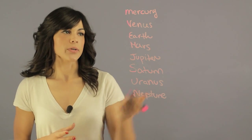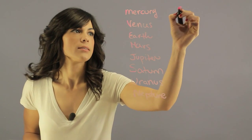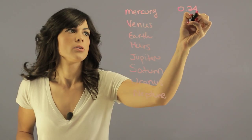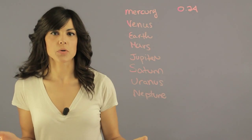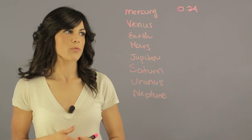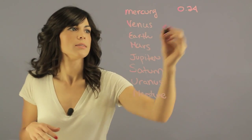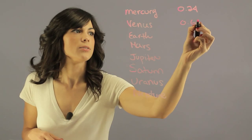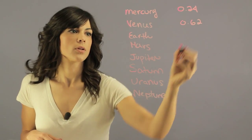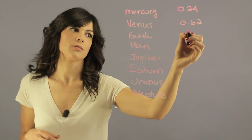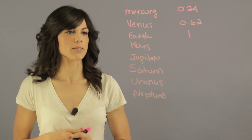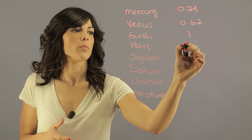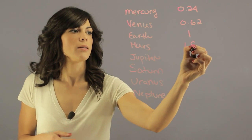For Mercury it's 0.24, so it takes about a quarter of a year. For Venus it's 0.62. For Earth it's obviously one — it takes us one year to orbit the Sun. For Mars it's 1.88.